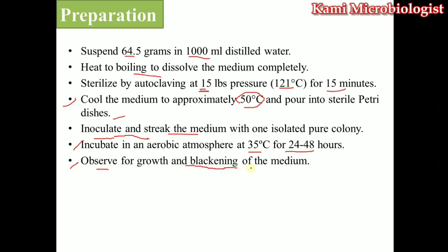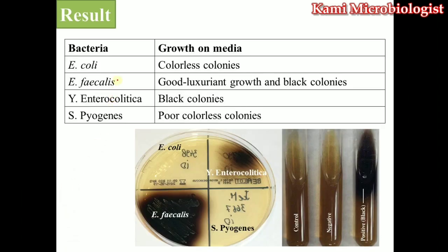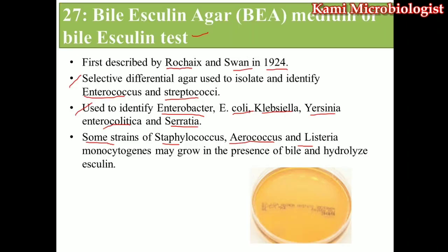Bacteria mostly produce blackening colonies on this media. The most important growth results are: E. coli and Streptococcus pyogenes show colorless colonies. Enterococcus faecalis and Yersinia enterocolitica produce black or dark colonies, as you can see. Yersinia enterocolitica and Yersinia fascia are also shown. That's all about Bile Esculin Agar, also known as the Bile Esculin Test. Thank you so much for watching.